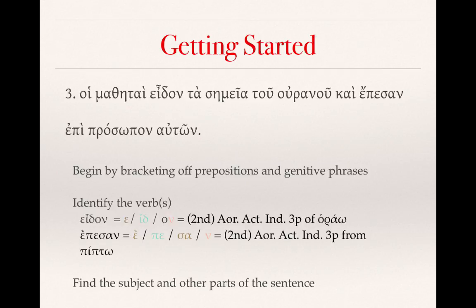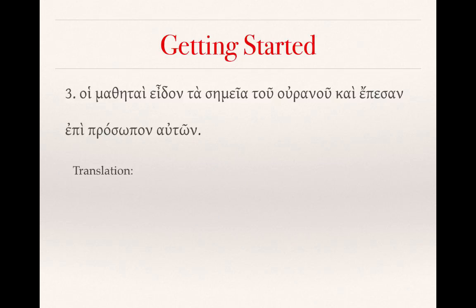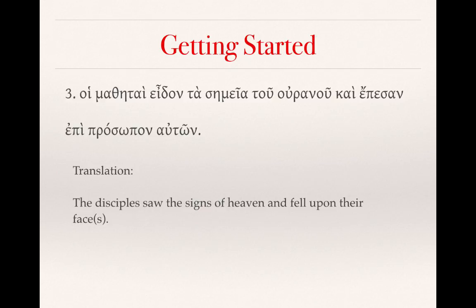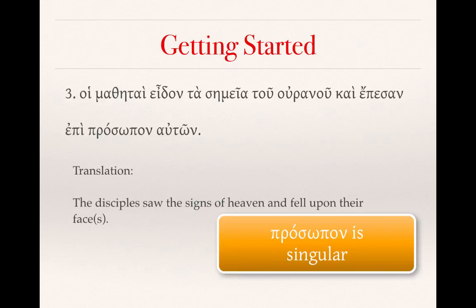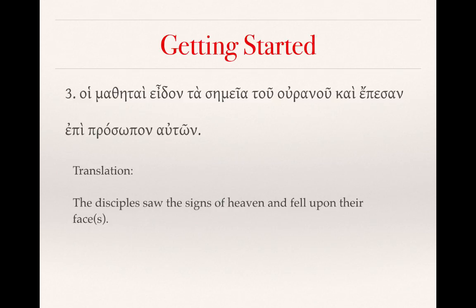Once we've identified prepositional phrases, genitive phrases, and verbs, we look for the subject and other sentence parts. Hoi mathetai is certainly in the nominative case, confirmed by the definite article. Ta semeia could be nominative as a neuter noun, but given that hoi mathetai is clearly the subject, it's best understood as accusative. A translation would be: 'The disciples saw the signs of heaven and fell upon their face.' Prosopon is singular, but with multiple disciples, 'faces' is also reasonable.